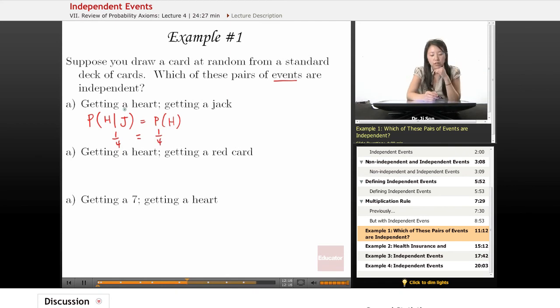Now, I chose probability of heart given jack, but you could have also done it the other way around. I'll write it in a different color. So the probability of jack given heart, right? Is that equal to the probability that you'll just draw a jack period?